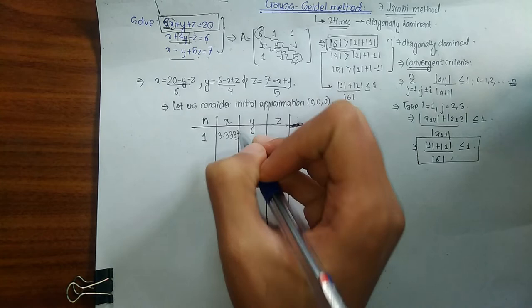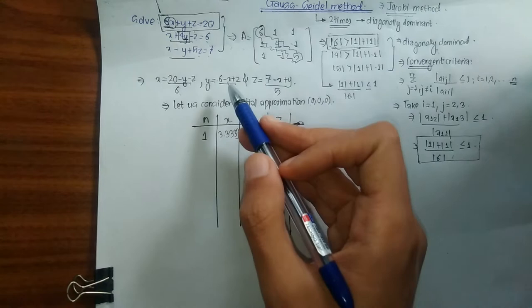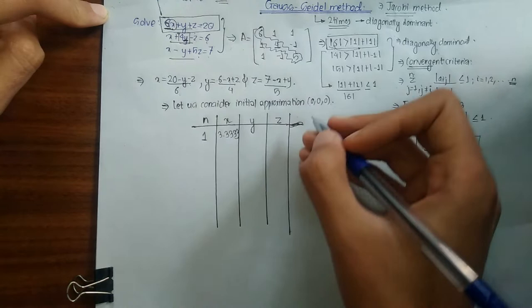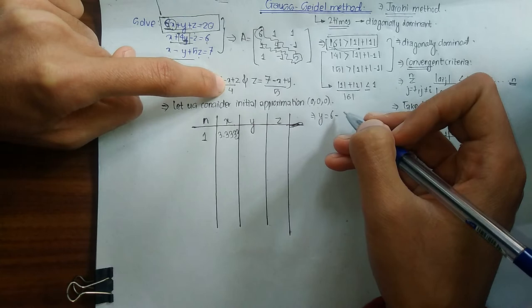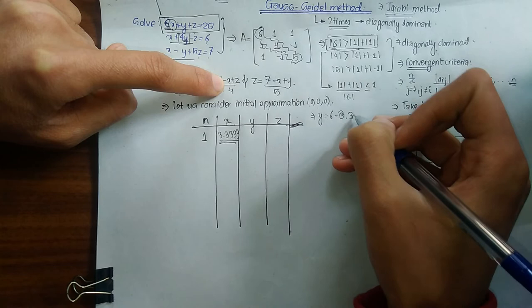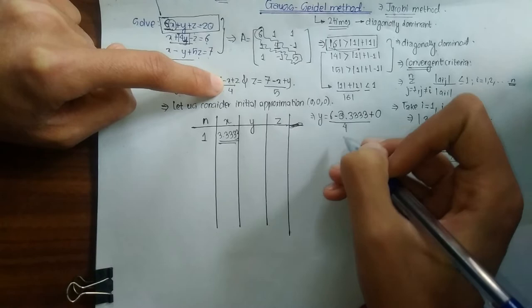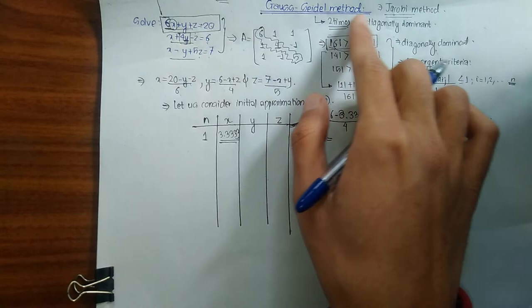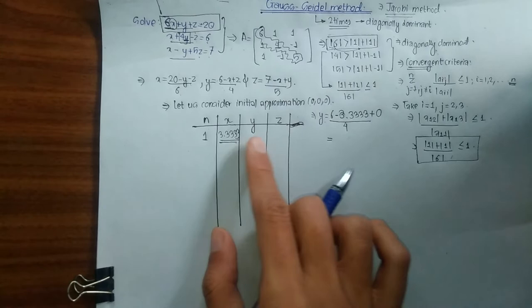In the Jacobi method, to calculate y we would place x = 0 (the previous value). But in the Gauss-Seidel method we use the latest updated value of x. Since our latest x₁ = 3.3333, we substitute x = 3.3333 and z = 0 into the y equation. This is the key difference: Gauss-Seidel always uses the most recently computed values, which is why it converges two times faster than the Jacobi method.